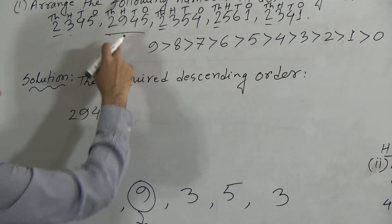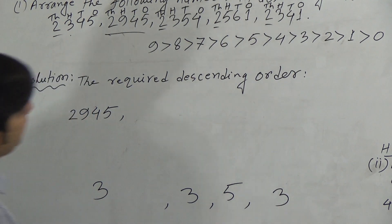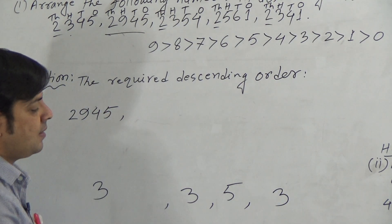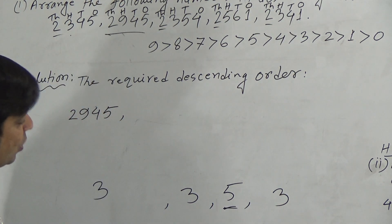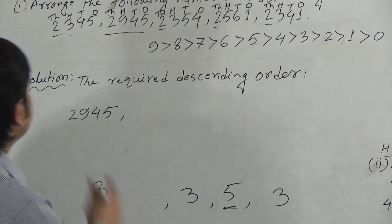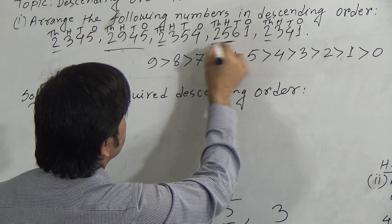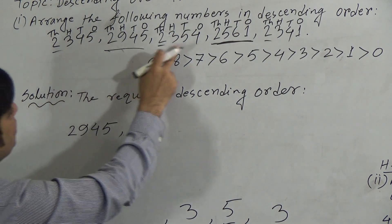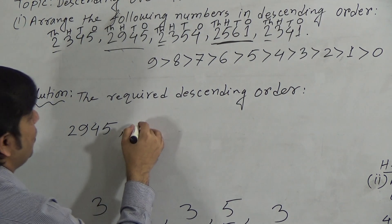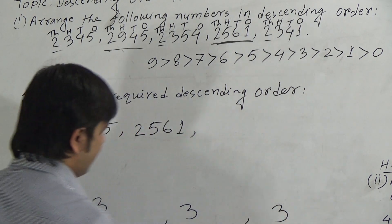Now we compare the hundreds digits of the remaining four numbers. Among these four digits, 5 is the largest one. So we find the number which contains 5 in the hundreds position. Checking: hundreds position is 3, hundreds position is 3, hundreds position is 5 — yes, that is 2,561. So 2,561 is the largest among the remaining four numbers. We write 2,561 second. Now three numbers remain: 2,345, 2,354, and 2,341.